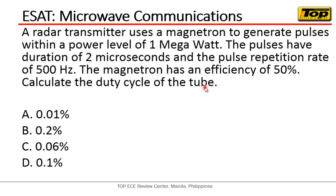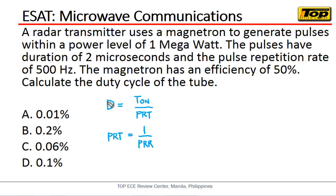As we all know, magnetrons are microwave oscillators used to produce pulses. There are many given values, but the only ones we need here are the duration of the pulses, which is two microseconds, and the pulse repetition rate, which is 500 hertz. From these we can find the duty cycle of the tube. The formula we'll be using: duty cycle is equal to the duration of the pulse over the pulse repetition time.